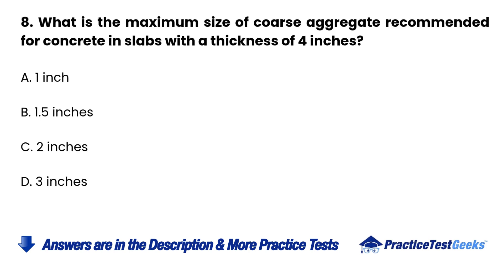Question 8. What is the maximum size of coarse aggregate recommended for concrete slabs with a thickness of 4 inches? A. 1 inch. B. 1½ inches. C. 2 inches. D. 3 inches.